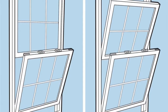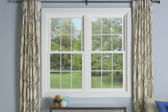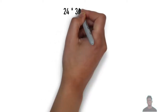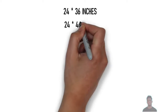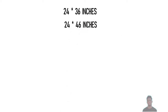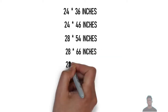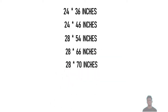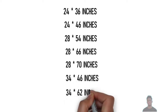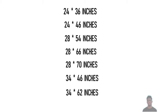Double-hung windows also look like two windows attached or mounted vertically, and this type is mostly used for living areas and bedrooms. The standard double-hung window sizes are: 24x36 inches, 24x46 inches, 28x54 inches, 28x66 inches, 28x76 inches, 28x70 inches, 34x46 inches, and 34x62 inches.